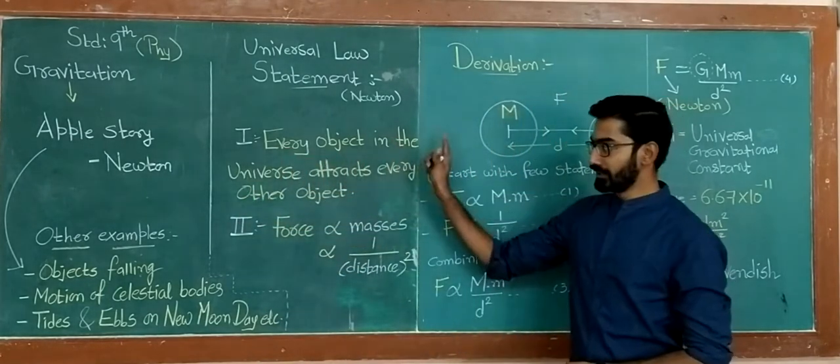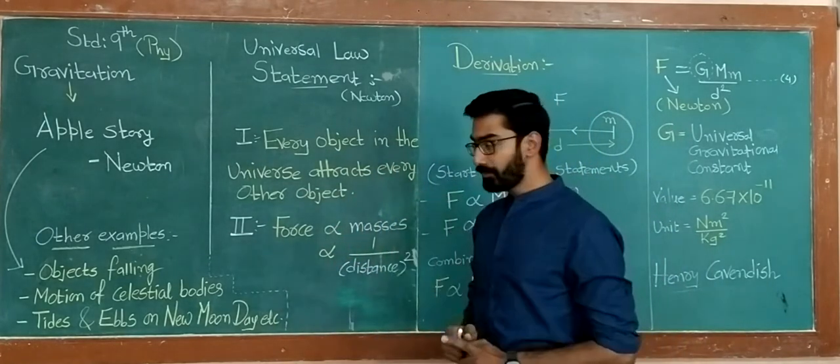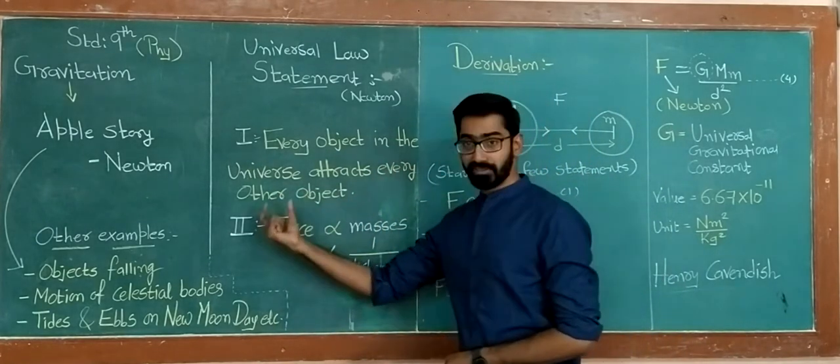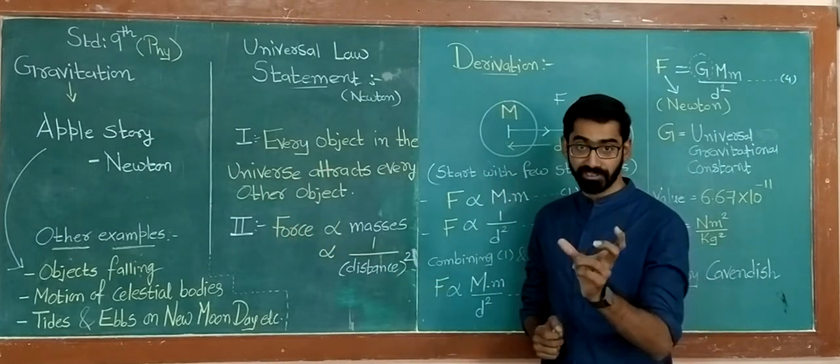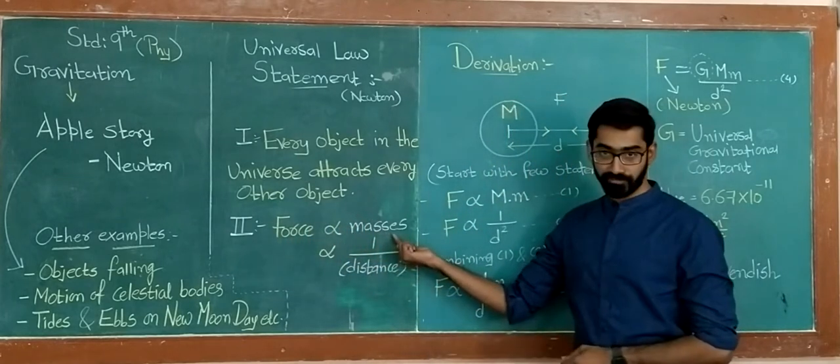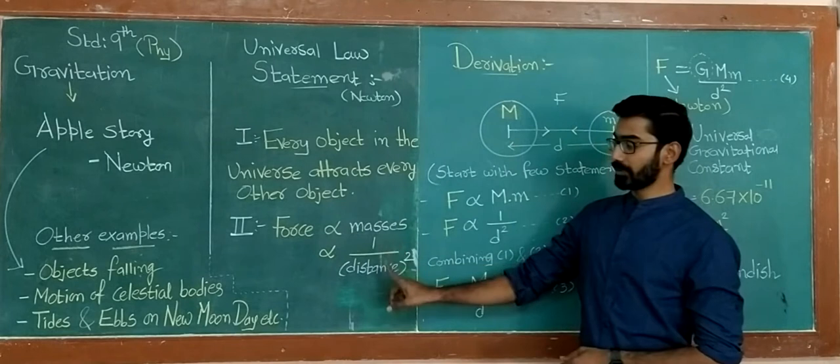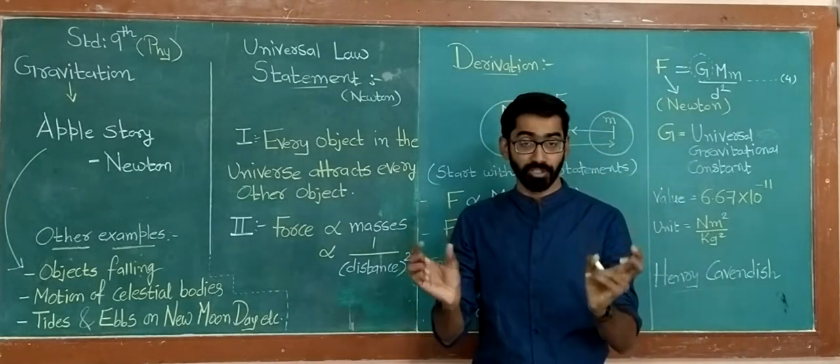every object in the universe attracts every other object. The second part is, with the force. Gravitational force is actually a force. So, that force is directly proportional to the product of masses, and inversely proportional to the square of the distance between those objects.